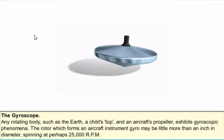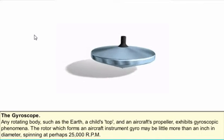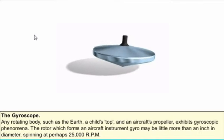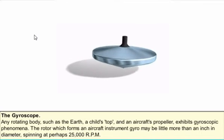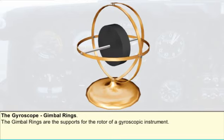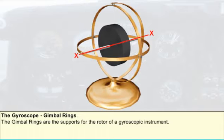The rotor which forms an aircraft instrument gyro may be little more than an inch in diameter, spinning at perhaps 25,000 RPM. Gimbal rings are the supports for the rotor of a gyroscopic instrument, sometimes just called gimbals. This diagram shows a spinning rotor mounted in two gimbal rings, the outer one supported by a fixed frame. The rotor itself is a metal disc rotating about the rotor spin axis.